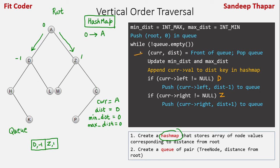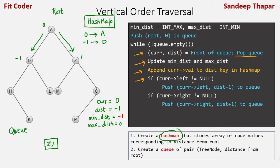In the next iteration, current becomes D and distance becomes minus 1, then we pop from the queue. We update minimum distance to minus 1; maximum distance remains 0. We append D to the minus 1 key in the hash map. We check left of D, which is H, and push H comma minus 2 to the queue. Right of D is L, so we push L comma 0 to the queue.